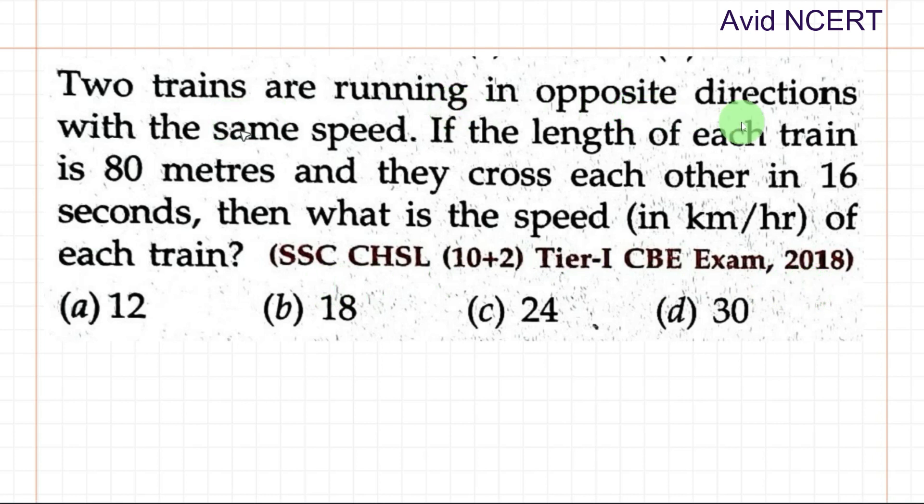Two trains are running in opposite directions with the same speed. The length of each train is 80 meters. They cross each other in 16 seconds. Then what is the speed in kilometers per hour of each train?